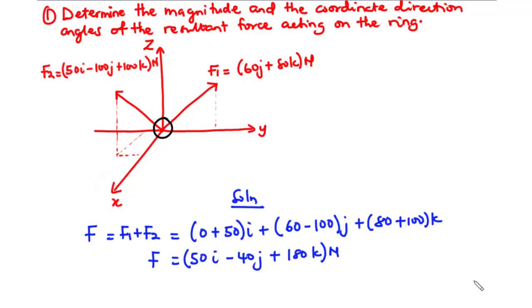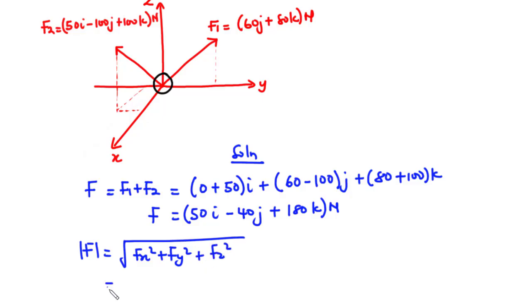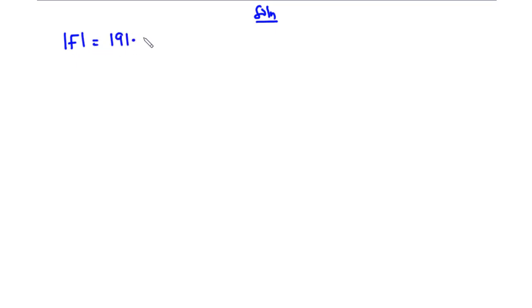Now let's find the magnitude. The magnitude equals the square root of Fx² plus Fy² plus Fz², which is the square root of 50² plus (−40)² plus 180². This gives 191.05 newtons. So this is the magnitude of the resultant force F.